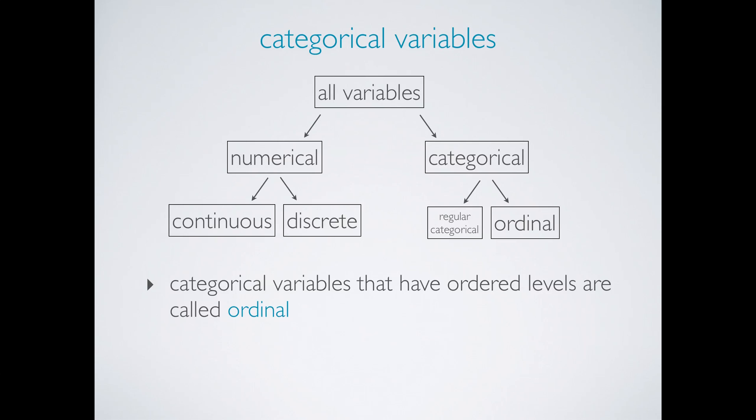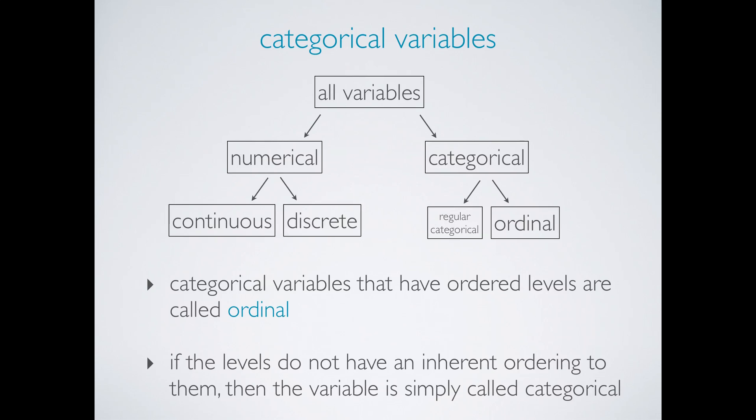Hence the variable would be called ordinal. If the levels of a categorical variable do not have an inherent ordering to them, then the variable is simply called categorical. For example, are you a morning person or an afternoon person?